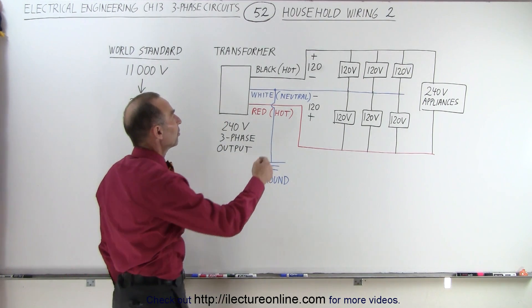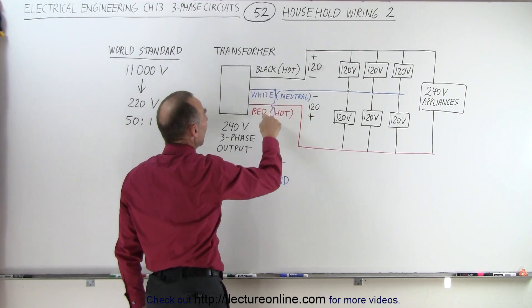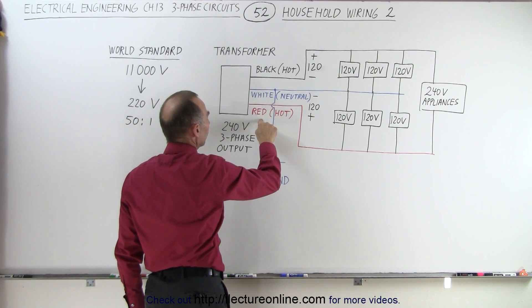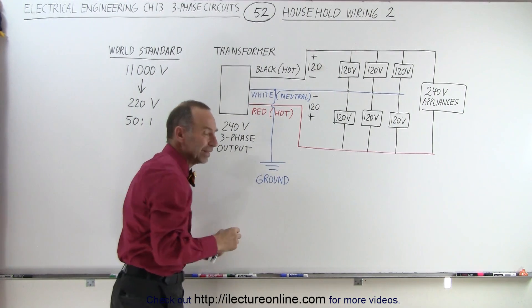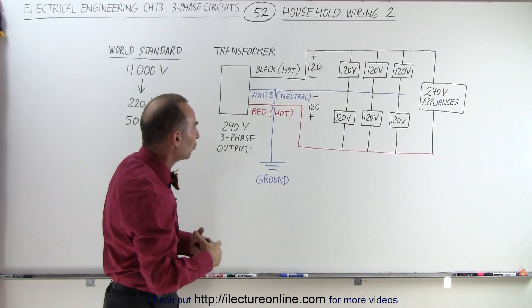Typically the color combination is such that we have two hot wires, one that's colored black and one that's colored red, and then there's a third wire, this is called a white wire, which is the neutral wire.